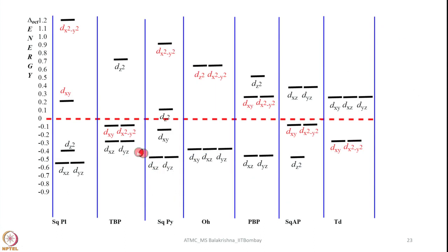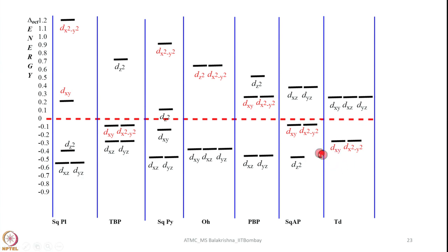I have listed here the relative energies of various d orbitals with respect to the corresponding ligand field — this is written in a different format here. I have included square planar, trigonal bipyramidal, square pyramidal, octahedral, pentagonal bipyramidal, square antiprism, and tetrahedral. Many textbooks give this kind of splitting diagram only for standard octahedral, tetragonal elongation and compression, and square planar geometries but not for many others. That is the reason I have included crystal field splitting for most of the geometries we come across in coordination chemistry with coordination number varying from 2 to 9.